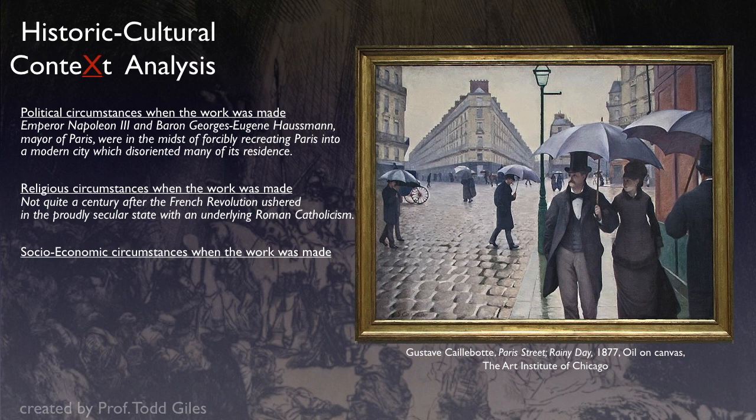What did I find under religious circumstances? It's a very secular society. This is less than 100 years after the French Revolution, and the country had gone from being very Roman Catholic to being very secular. The people in Paris at this time were really not dependent on God or religion — it wasn't part of their daily lives.